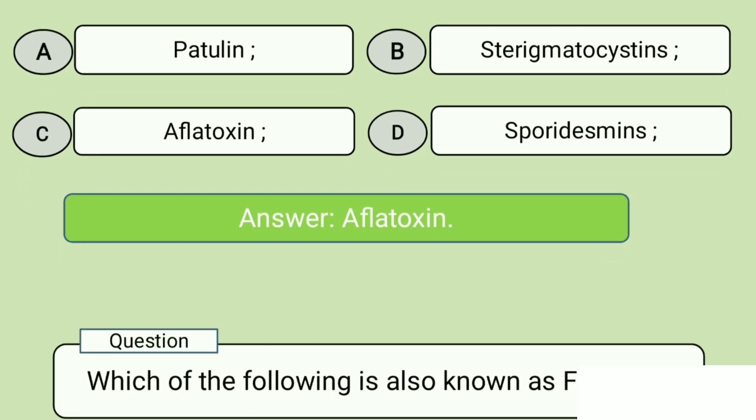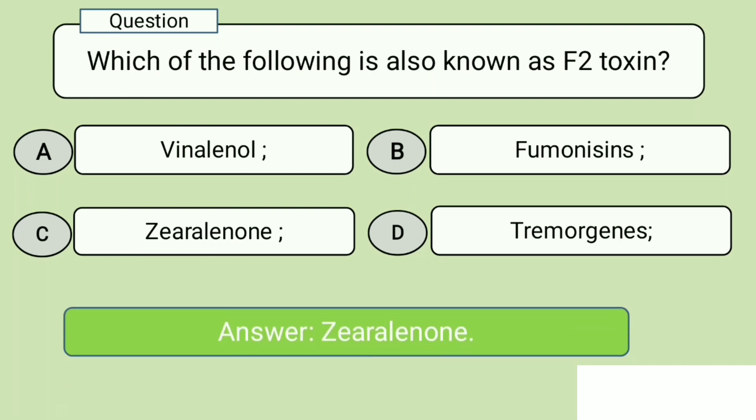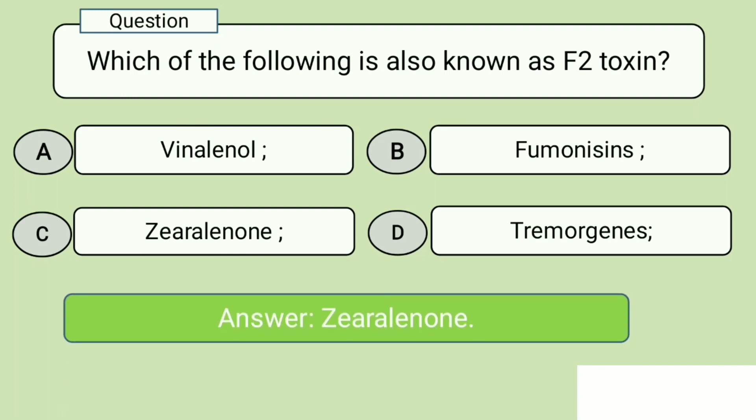Question 10. Which of the following is also known as F2 toxin? A. Nivalenol, B. Fumonisins, C. Zearalenone, D. Tremorgens. Answer: Zearalenone.